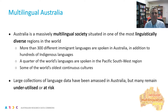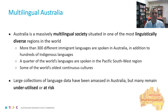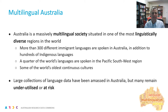Australia is sometimes thought of as an English-speaking country, and while it's true it's an important lingua franca in society, Australia is actually a massively multilingual society and it's situated in one of the most linguistically diverse regions in the world. There are more than 300 different immigrant languages spoken in Australia, including English, in addition to hundreds of Indigenous languages as well. And in Australia's region, in the Pacific Southwest, actually more than a quarter of the world's languages are spoken.